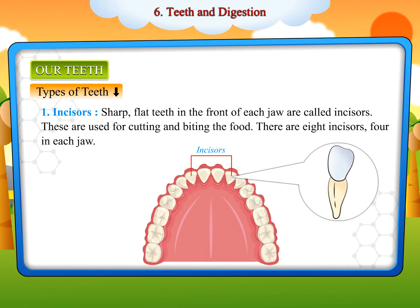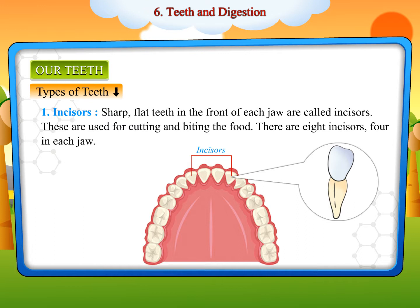Incisors are sharp, flat teeth in the front of each jaw. These are used for cutting and biting the food. There are eight incisors, four in each jaw.